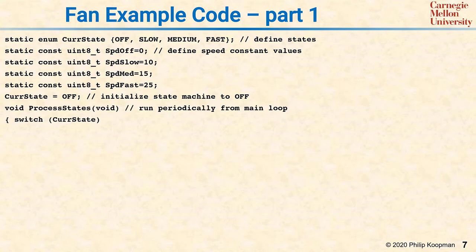And note that we're able to use the name of the state so it's more obvious what's happening in the code. There's a procedure, processStates, which periodically runs from the main loop. So for example, it might run 10 times per second and processes this state machine. In general, every state machine will have a subroutine like this to process its states. And all the state machines are run periodically in part of the main loop of the software.